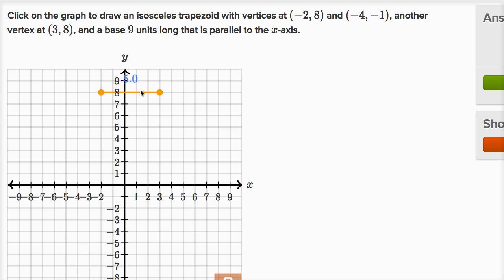This is the top of our isosceles trapezoid. It's nice, they gave us the length. The length of this top is five. And then, now we can do negative four comma negative one. Negative four comma negative one is this point right over here.